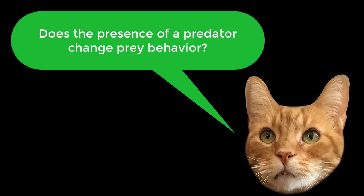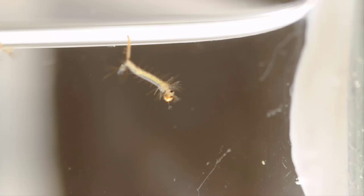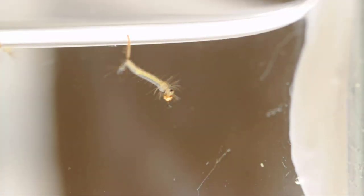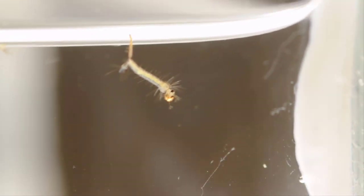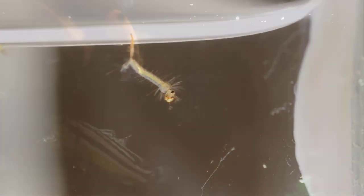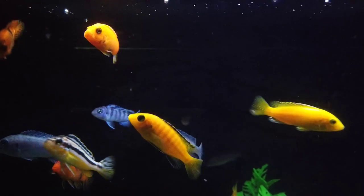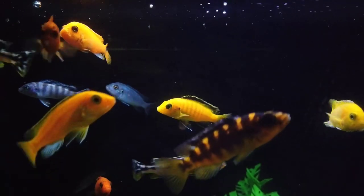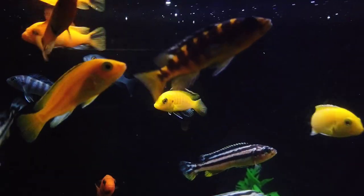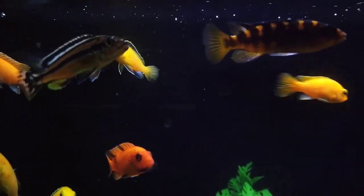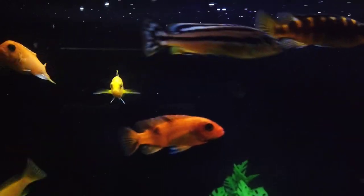Our main question this week is: does the presence of a predator change prey behavior? To do this, we will be studying the time budgets of larval mosquitoes. A time budget is a record of how an animal spends its time. We will be watching mosquito larvae in the presence and absence of predators, and seeing if mosquito behavior changes in the presence of a predator.